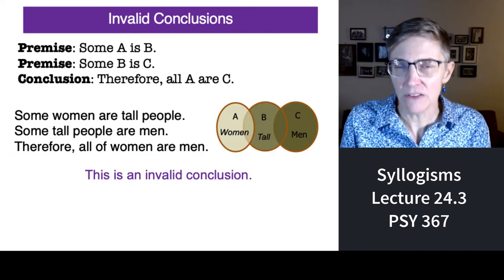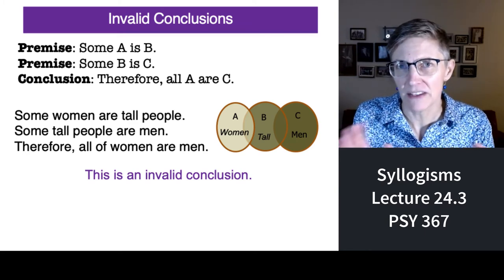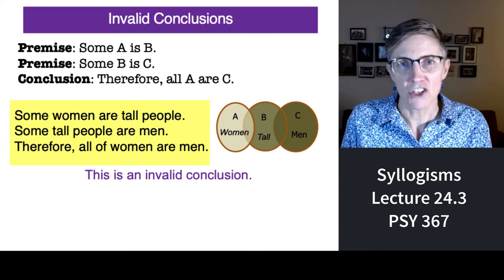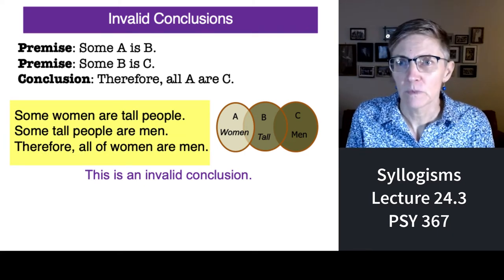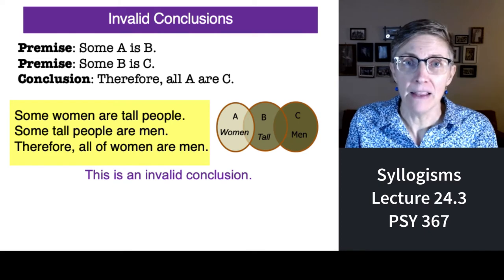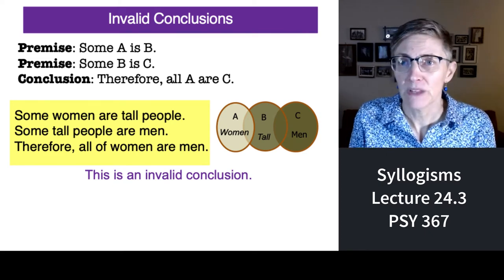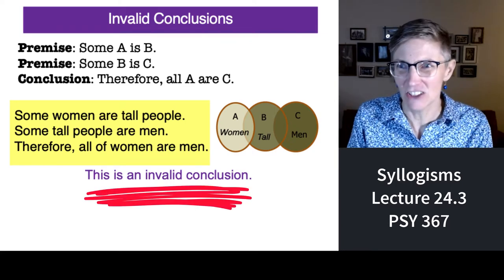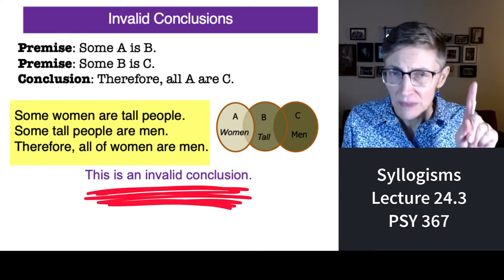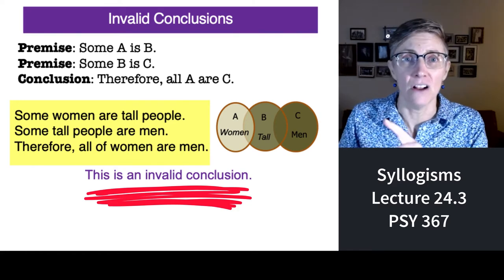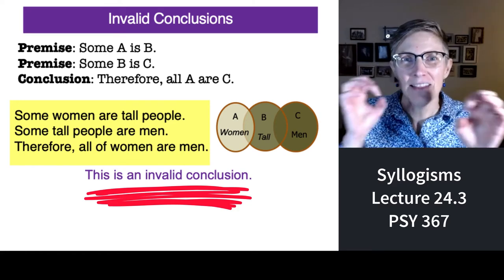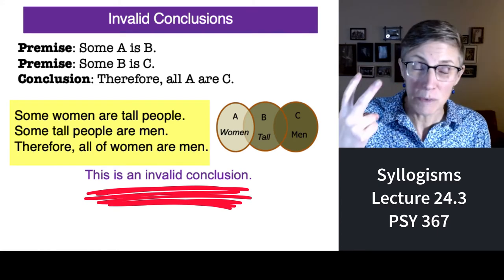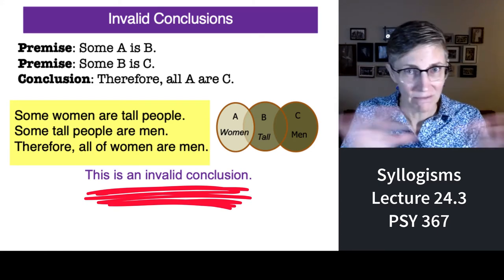Let me give you another one where you can see where things kind of go off the rails. Some women are tall people — well, that's true. Some tall people are men — that's true too. Therefore, all women are men. Nope. Invalid conclusion. It's true that some women are tall, and it's true that some men are tall, but that does not mean that men and women are the same. Two premises that are reasonable, but a conclusion that's haywire.